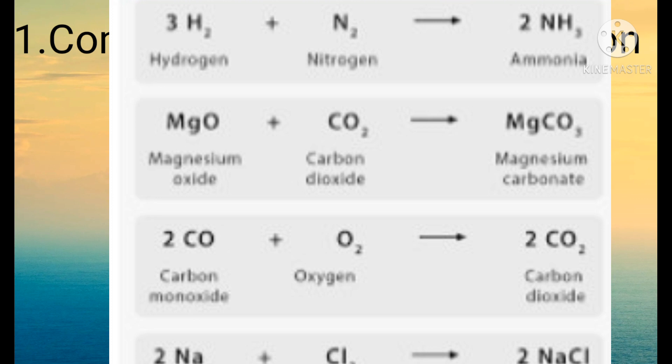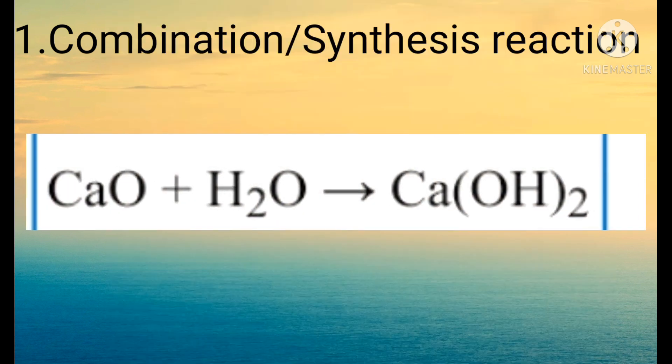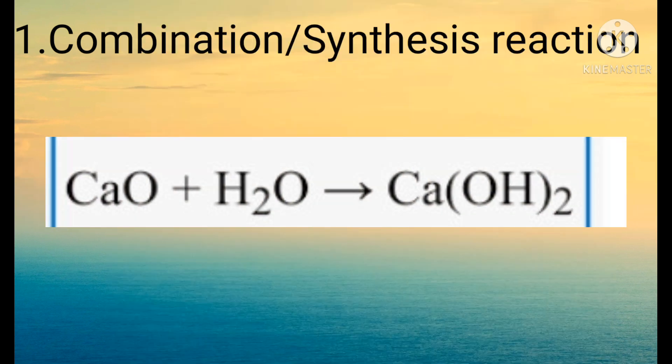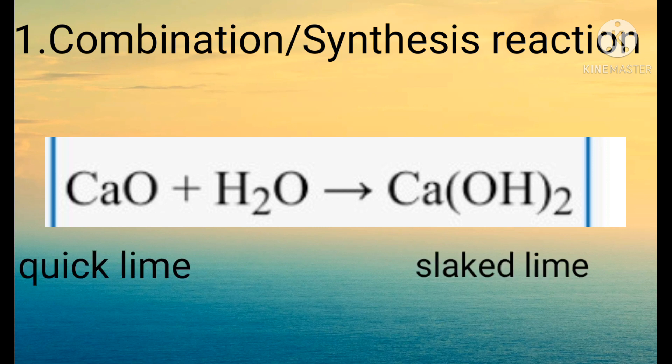Here are the examples of combination reactions. The first example is ammonia — it is only one product obtained from two substances, nitrogen and hydrogen. The next example is preparation of slaked lime, that is calcium hydroxide. Calcium hydroxide is one product obtained from two reactants: quicklime (calcium oxide) and water. So it is a combination reaction.